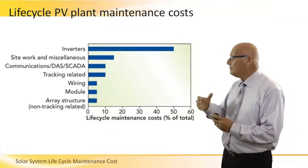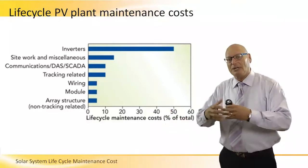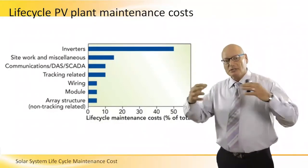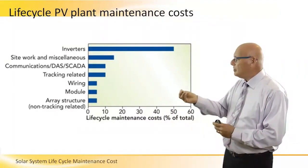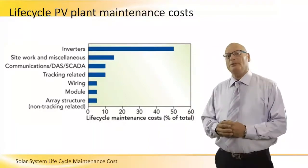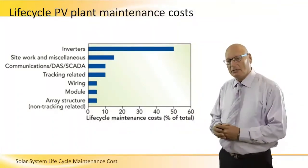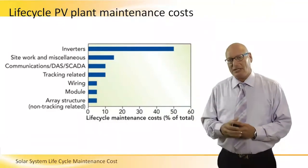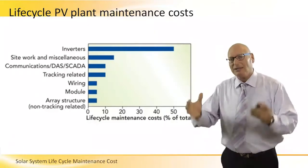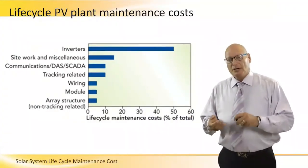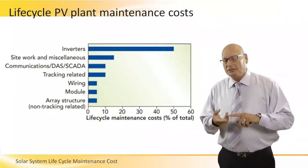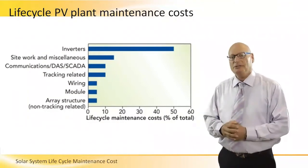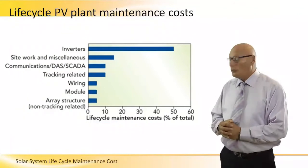Then we have site work and miscellaneous items related to a PV system — meters, connectors, and junction boxes. Communication — the way we monitor system performance — contributes approximately 10%. If the system is a tracking system, whether single-axis or dual-axis, the tracking mechanism itself — the motors, pistons, hydraulic system, motor controls, and gears — all these mechanical components need to be maintained, contributing approximately another 10%.